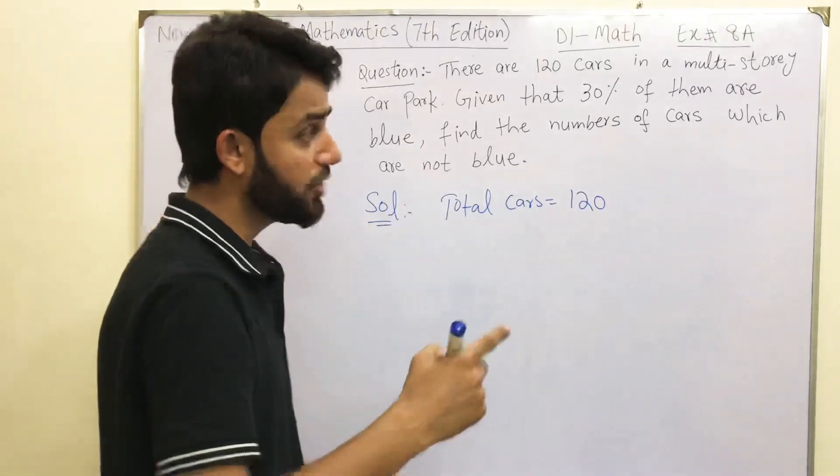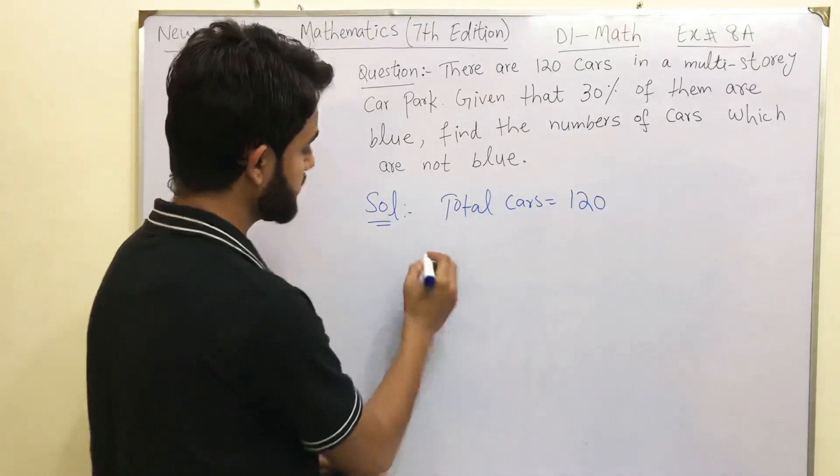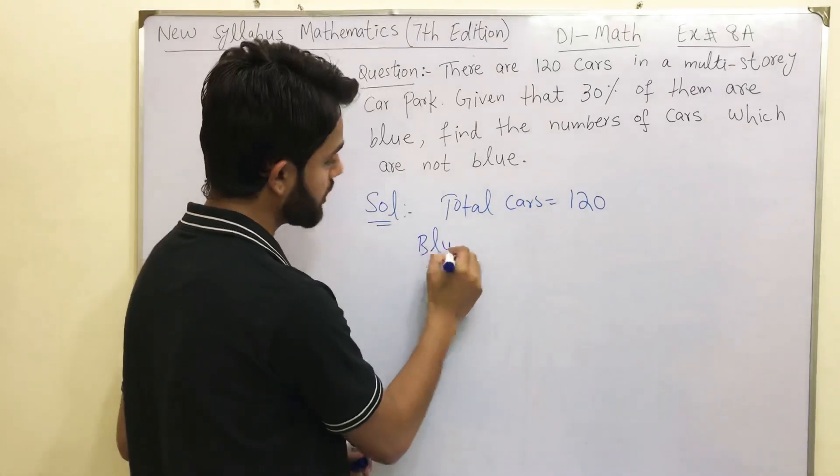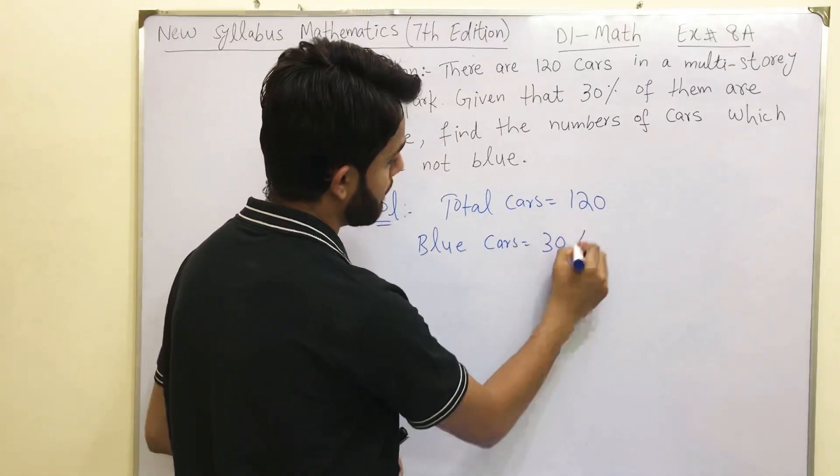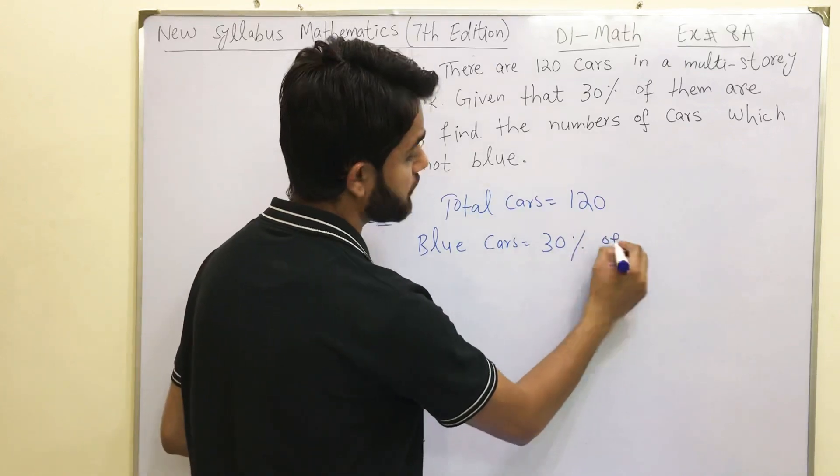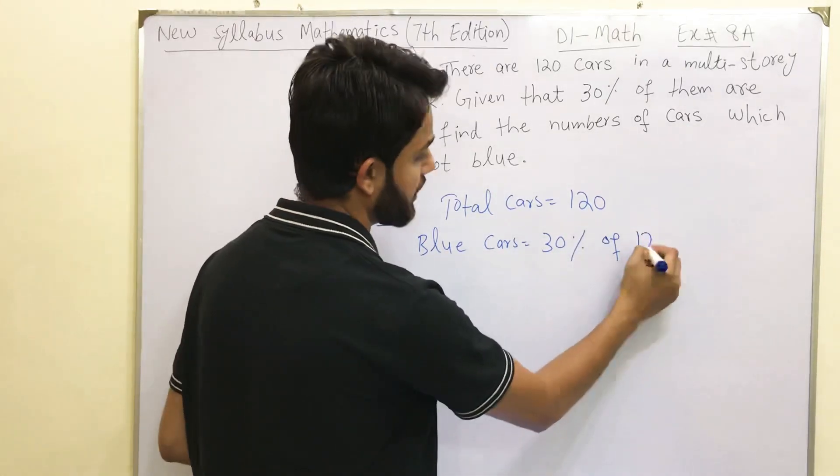Given that 30% of them are blue. 30% of them blue. How many blue cars? 30% of total, and the total cars are 120.